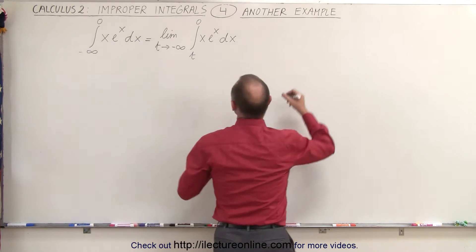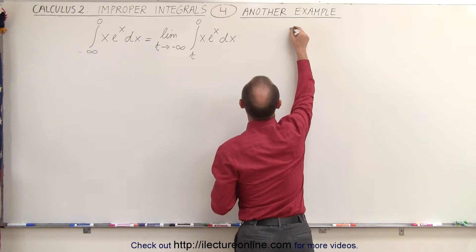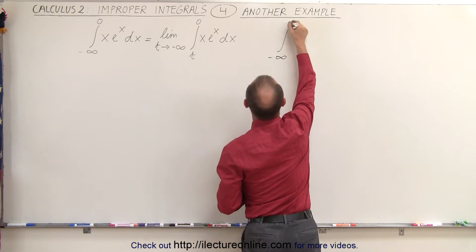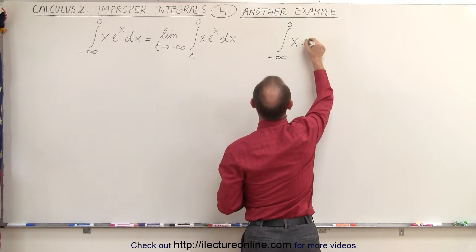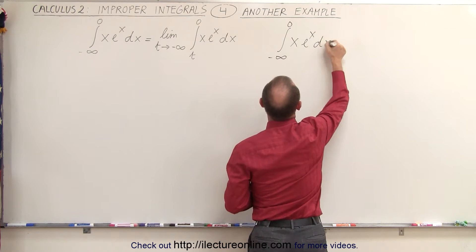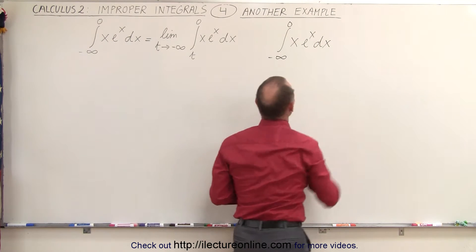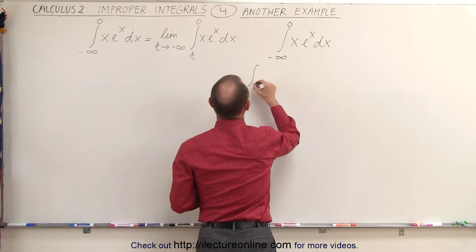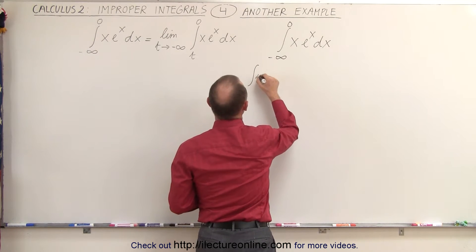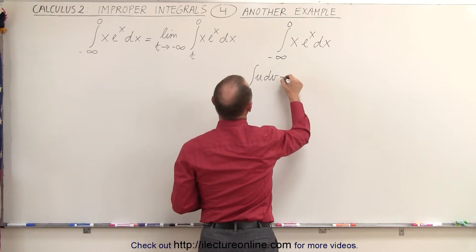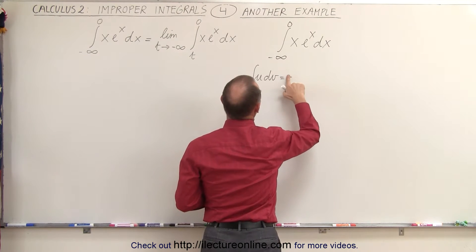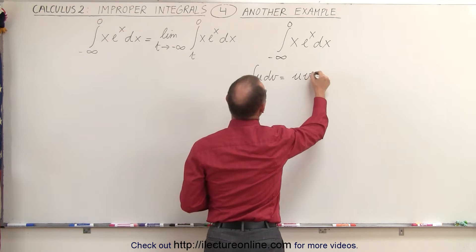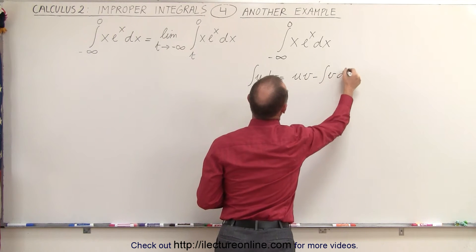Let's just ignore everything and assume that we can integrate from minus infinity to 0 the function x·eˣ dx. To solve that, we have to integrate by parts. We're going to say that the integral of u dv is equal to u times v minus the integral of v du.